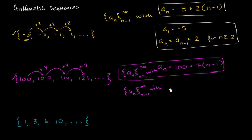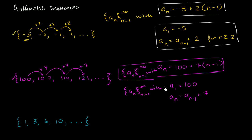We could also define it recursively: a sub 1 is equal to 100, and a sub n is equal to a sub n minus 1 plus 7, for any index above 1. This is another valid way of defining the sequence.